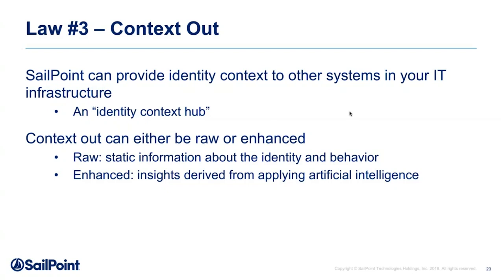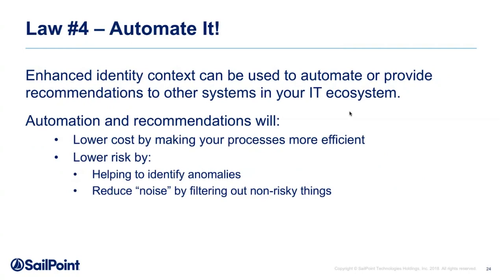We apply machine learning to do pattern recognition, give recommendations, and do predictive analysis. Those insights become really useful throughout your security ecosystem. And finally — law four — whenever you can, automate things. You have the identity context and machine-generated insights; you want to automate whatever processes you can with that information.